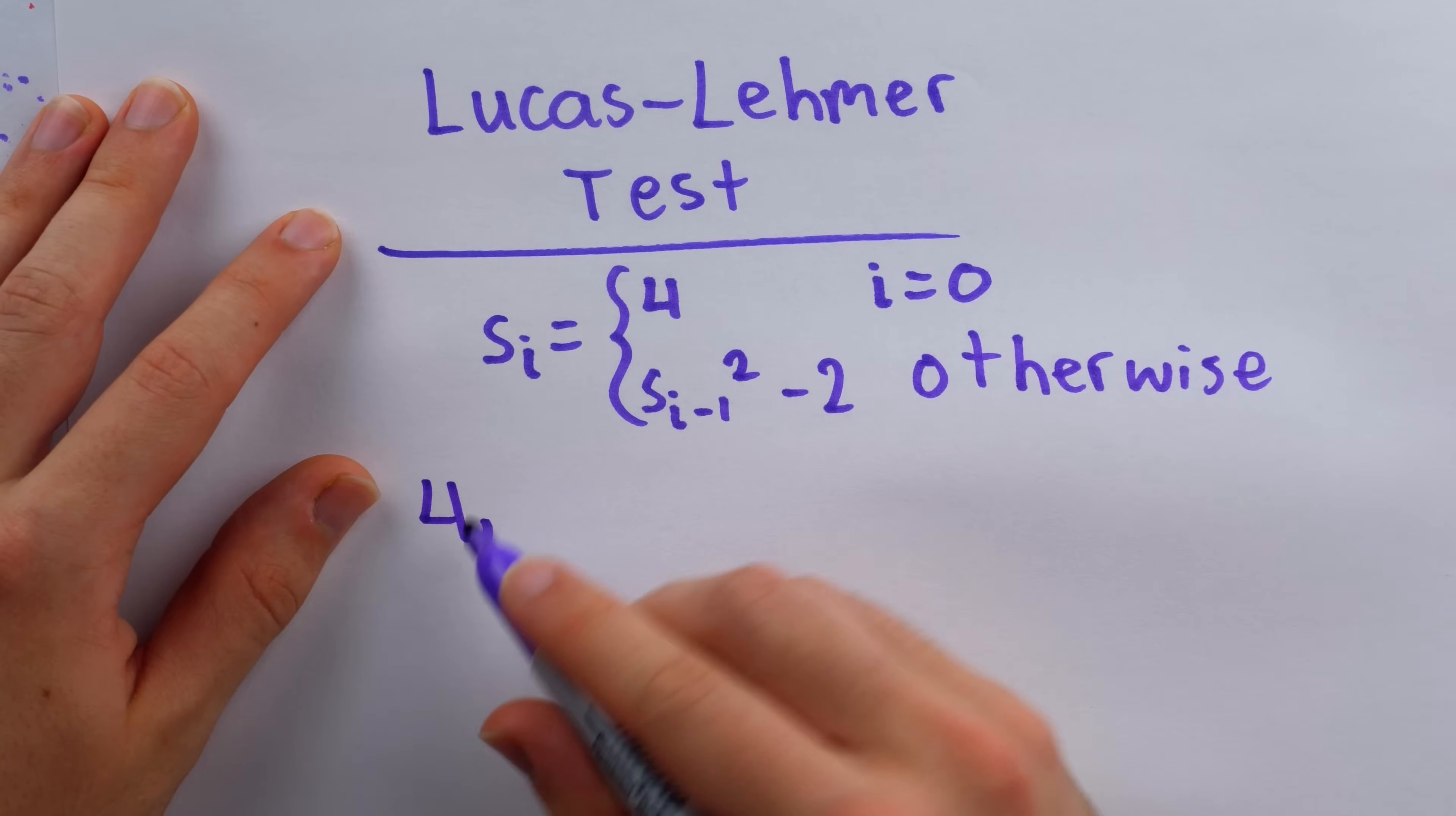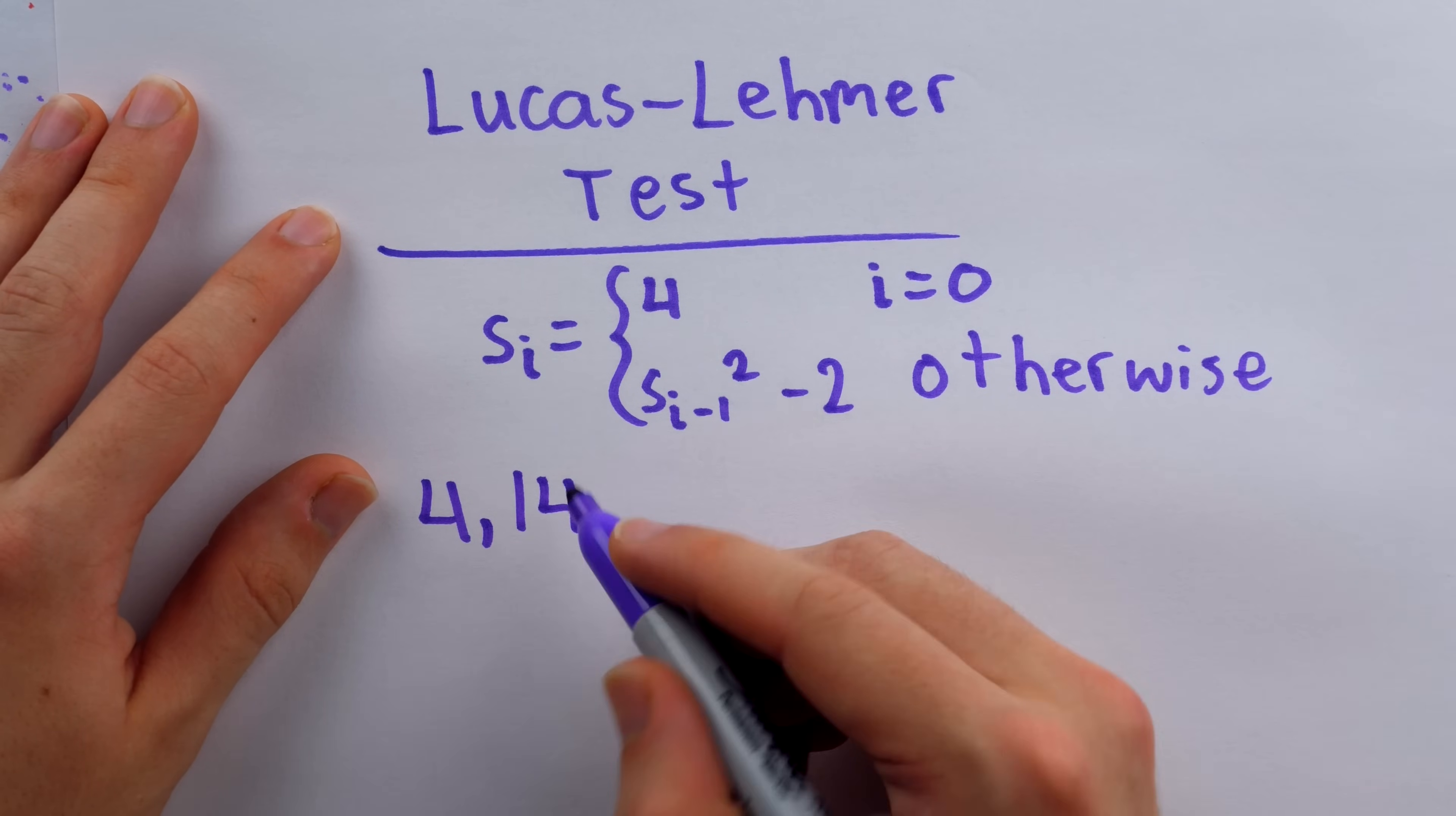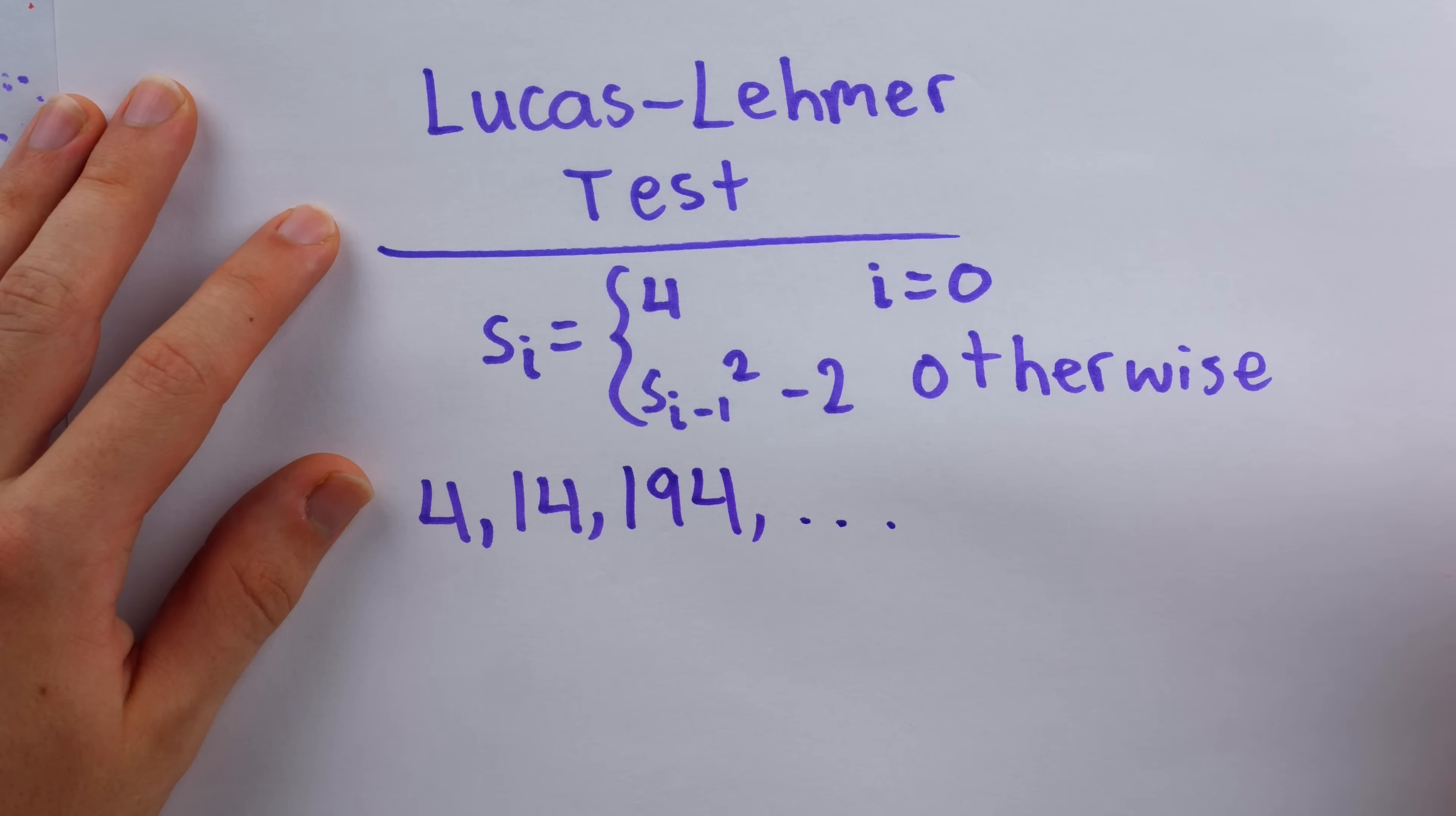So the first few terms of this sequence would be four. And then to get the next term, square this, which is 16, and subtract two, which is 14. Then to get the next term, square this, which is 196, and subtract two, which is 194, and so on.